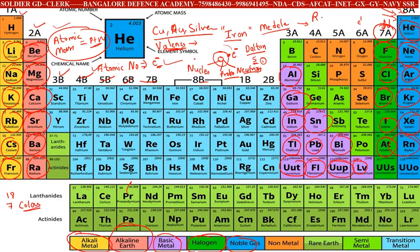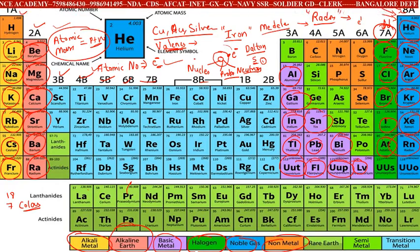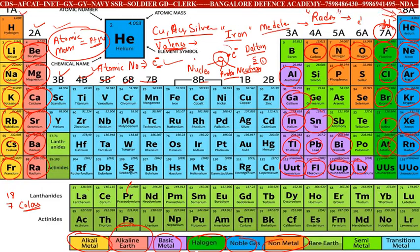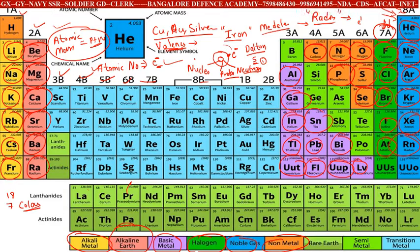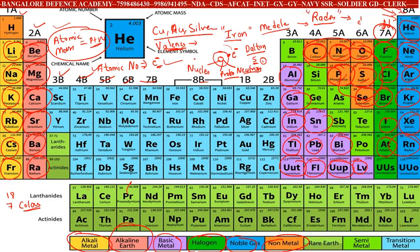Radon is a gas that is artificially made in the laboratory. Non-metals are shaded in brown color: carbon, nitrogen, oxygen, phosphorus, sulfur, and selenium. These are the non-metals.